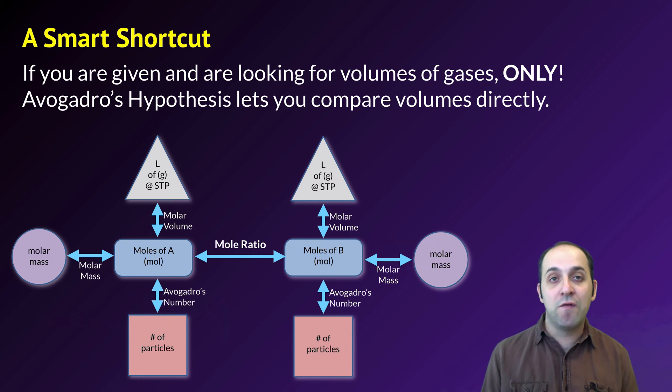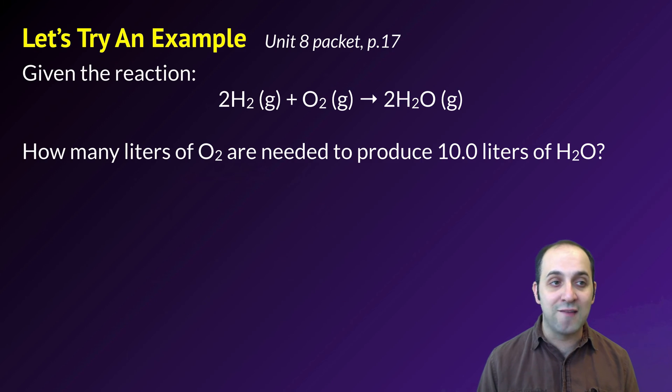Avogadro's hypothesis, equal volumes of gases have equal numbers of molecules at the same temperature and pressure, means that you can compare gas volumes directly. You can just use them as an analog for the mole ratio. Totally fine. Let's go in and look at an example of that.